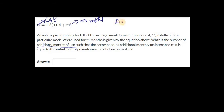The additional monthly maintenance cost is the change in c. What is that equal to? The change in c equals the initial monthly maintenance cost of an unused car. In this case, the change in c is not explicitly stated, but we need to find it out. We need to find the initial monthly maintenance cost.